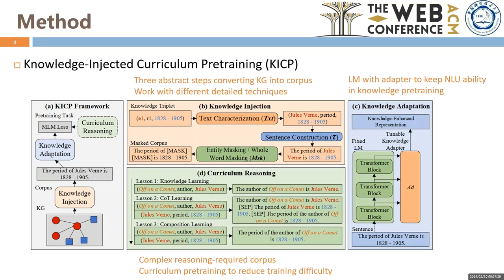Second, in knowledge adaptation, we equip language models with an adapter to keep their language understanding ability during knowledge pre-training. And last, in the curriculum reasoning component, we construct complex examples that require human-like reasoning, such as multi-hop reasoning, and pre-train the language model with curriculum settings.